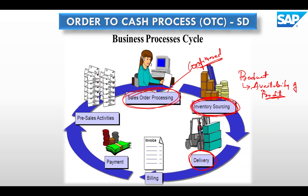Once we source the product, we issue the goods and deliver the product to the customer. We then generate a billing document based on the delivery. In billing, pricing is fetched from the sales order and the quantity is based on the delivery. After billing, the payment is handled by FICO consultants.